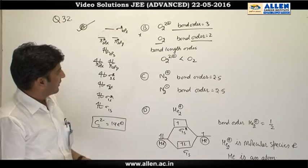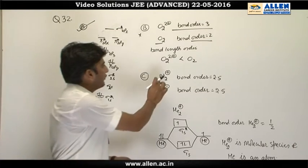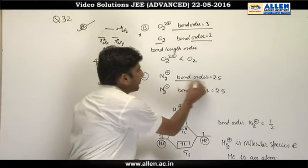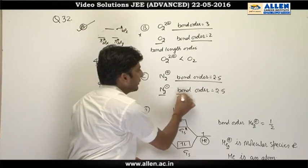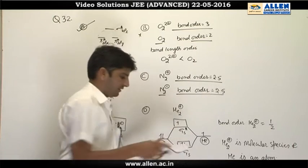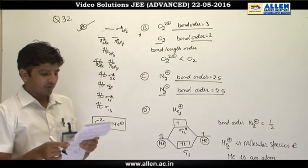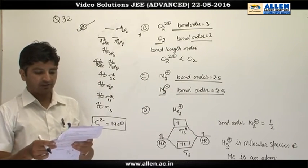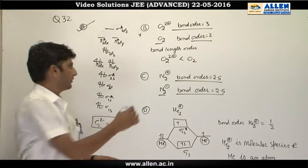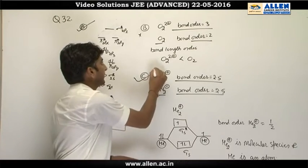Option C: N₂²⁻ ka bond order 2.5 hai aur N₂⁻ ka bond order bhi 2.5 hai. So N₂²⁻ and N₂⁻ have the same bond order. This is a correct statement.